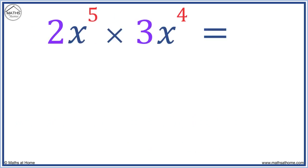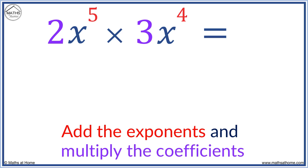Here we have an example with coefficients shown in purple and exponents shown in red. We add the exponents like before, but multiply the coefficients. 2 times 3 equals 6.